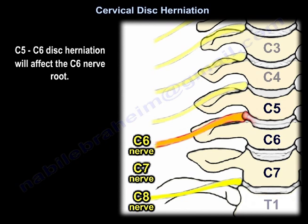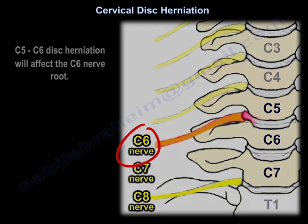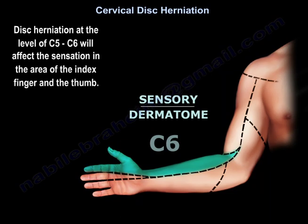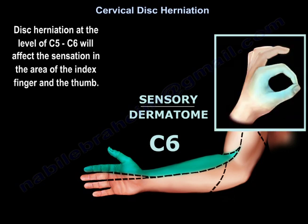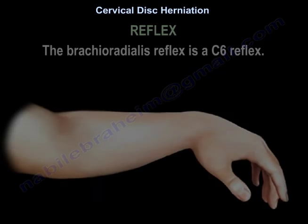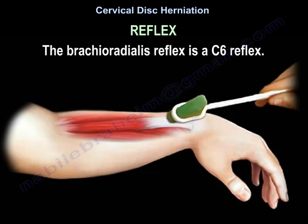For C5-C6 disc herniation, this will affect the C6 nerve root. It will affect sensation at the index finger and the thumb. You can see in the diagram to the right the area involved in C6 nerve root irritation. The brachioradialis reflex is a C6 reflex.